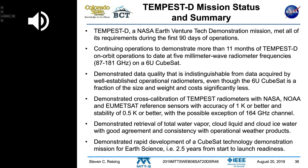Overall, Tempest D is a NASA Earth Venture Technology demonstration mission. We've met all requirements in the first 90 days of operations. We planned it for 90 days but built things to work longer, and we've now demonstrated more than 11 months of on-orbit operations — measuring at five millimeter wave frequencies from 87 to 181 GHz on a 6U CubeSat — with quality indistinguishable from well-established radiometers.